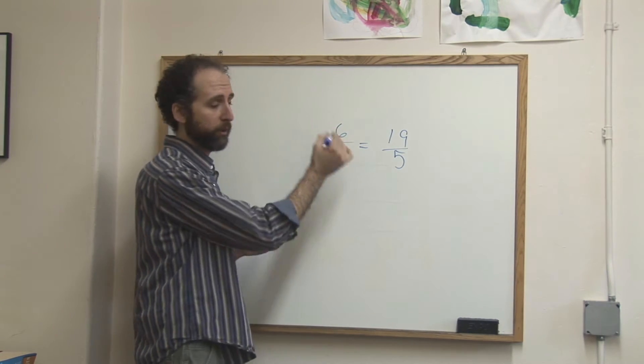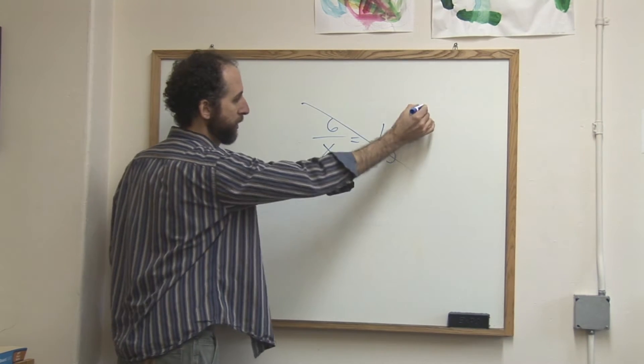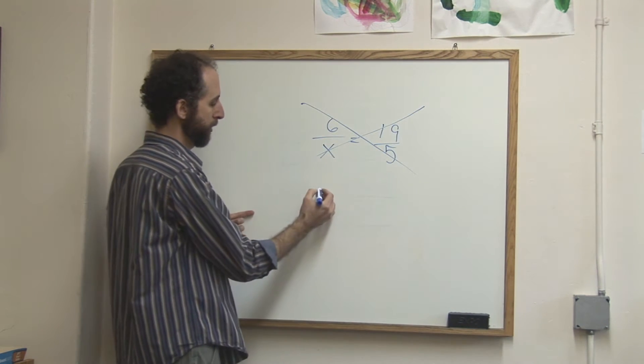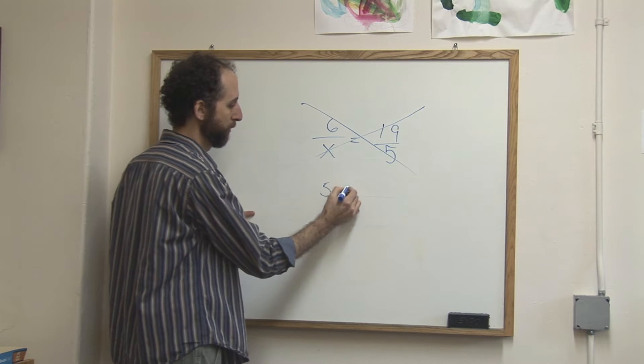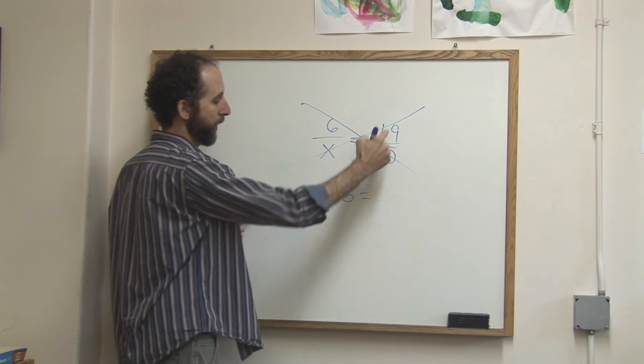Cross multiply literally means you're going to cross them and you're going to multiply. So you're going to do 5 times 6 and 19 times x. So 5 times 6 is going to equal x times 19.